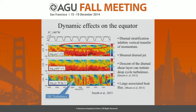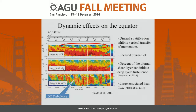Recent work by Bill Smyth and co-authors working at 140 West in the Pacific showed how the descent of this diurnal shear layer following the base of the afternoon and evening mixed layer could provide the perturbation necessary to initiate large deep cycle turbulent events shown here in turbulent dissipation rate. We know that this deep cycle turbulence plays a very fundamental role in the seasonal mixed layer heat budget on the equator, providing a nice example of how the ocean dynamic response on the diurnal timescale can directly affect measures of very widespread importance.